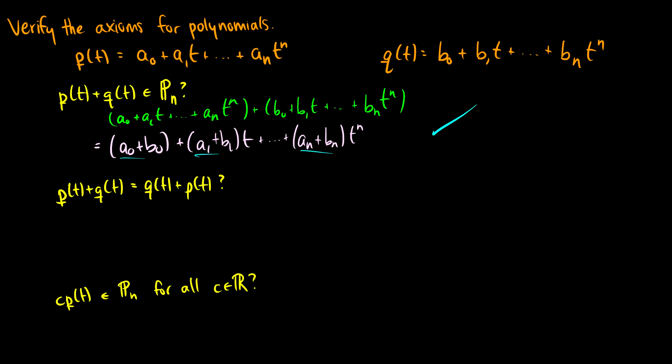and we know that we can switch the values of this, right? We know that we can write this as b_0 plus a_0, because these are just real numbers, we've already worked with these. This is b_1 plus a_1 t, all the way up to b_n plus a_n times t to the n, and then we can separate these again.